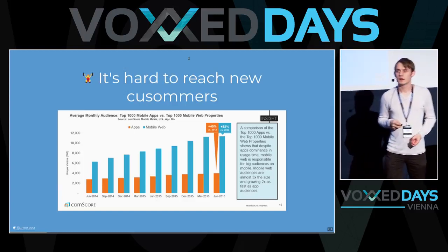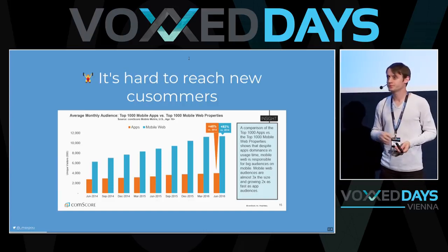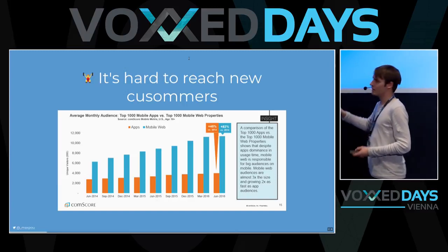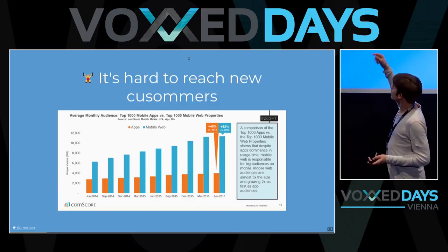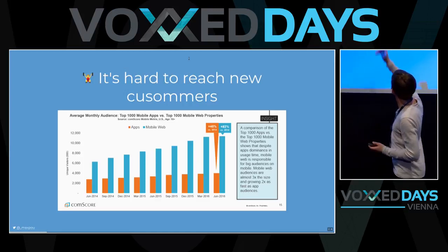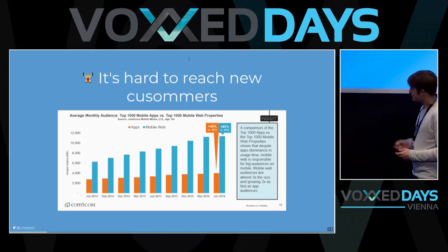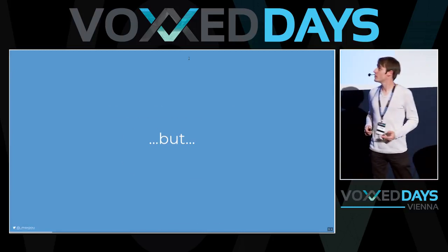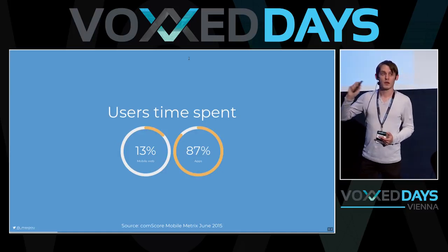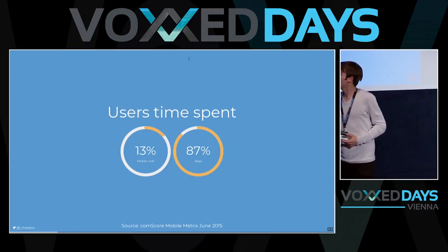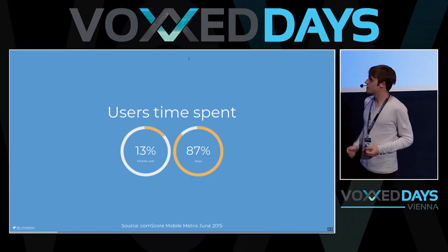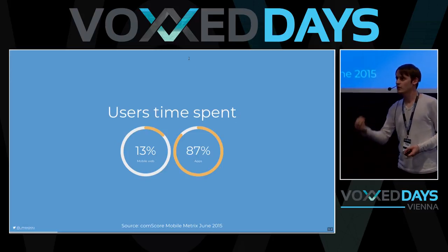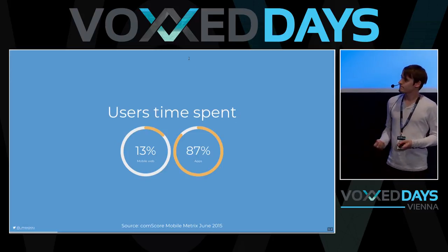About reachability: because of all this friction, it's hard for you to get new customers on your app. On the other hand, with mobile web, it's much simpler to reach new customers. But if you have an app, you probably know that users spend more time on the native app than on a mobile website. Why? You have notifications, the user already has the icon on the desktop — so there is more engagement.